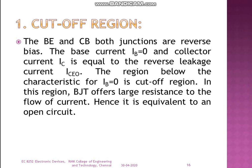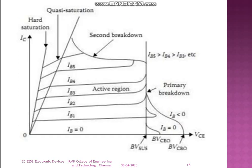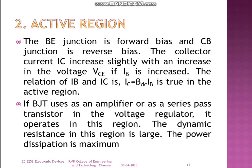In the cutoff region, the BJT is equivalent to an open circuit. In the active region, the base-emitter junction is forward biased and the collector-base junction is reverse biased. The collector current IC increases slightly with an increase in VCE voltage as IB is increased. When the BJT is used as an amplifier or as a series pass transistor in a voltage regulator, it operates in the active region. The dynamic resistance in this region is large and the power dissipation is maximum.